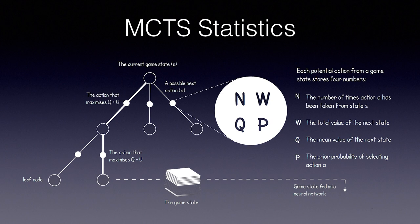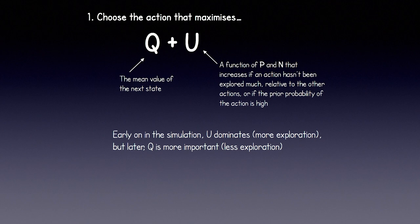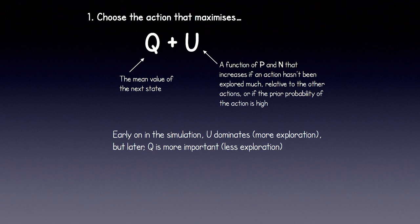Now that we know the basics, let's have an in-depth look at how to execute the Monte Carlo Tree Search algorithm. Our starting point is the root node, which represents the current game state. Step 1: choose the action that maximizes Q plus U. Q is the mean value of the next state, and U is a function of P and N that increases if an action hasn't been explored much relative to the other actions, or if the prior probability of the action is high.